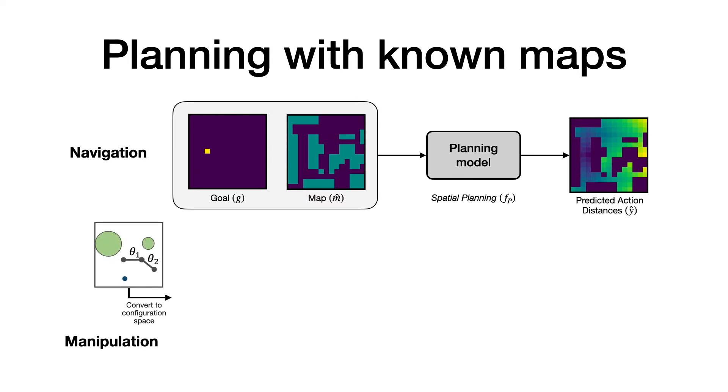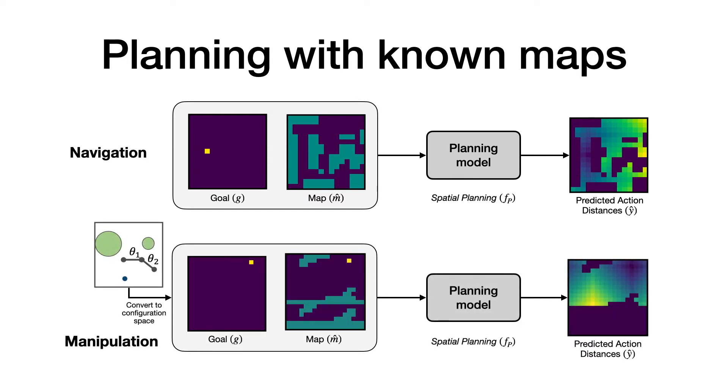We implement planning with known maps for both navigation and manipulation. For manipulation, we consider a planar arm with two degrees of freedom and convert the observation into the configuration space to get the input map.